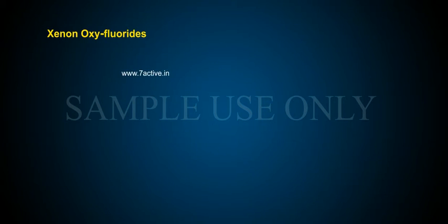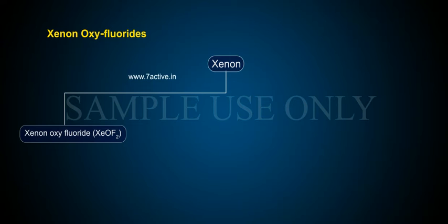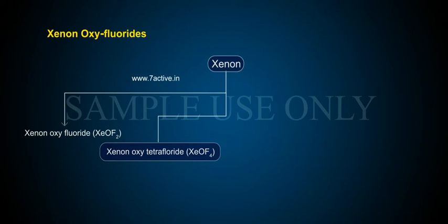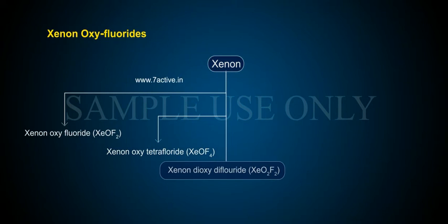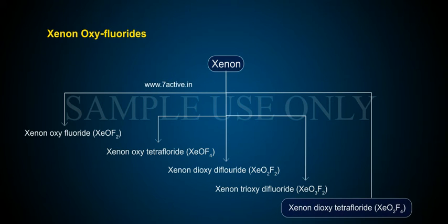Xenon forms five oxifluorides: Xenon Oxifluoride XeOF2, Xenon Oxytetrafluoride XeOF4, Xenon Dioxydifluoride XeO2F2, Xenon Trioxydifluoride XeO3F2, and Xenon Dioxytetrafluoride XeO2F4.